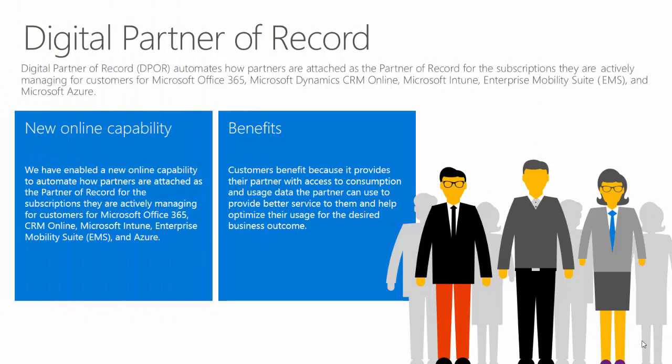First, what is digital partner of record? Digital partner of record, or DPOR, automates how partners are attached as the partner of record for the subscriptions they actively manage for customers — for Office 365, CRM Online, Intune, Enterprise Mobility Suite, and Azure.